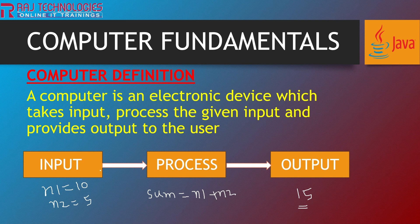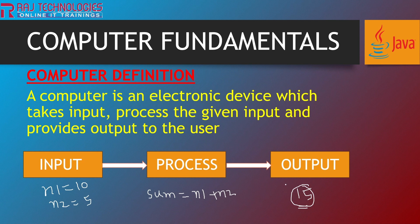So from where are we going to accept the input? From keyboard. The process is our CPU. Then output — where are we going to display this output? On our monitor screen. So input we accept using keyboard, process is done inside your computer that is your CPU, and output we are going to display on our screen, that is the monitor.